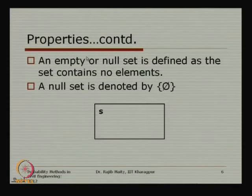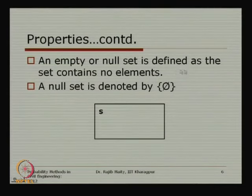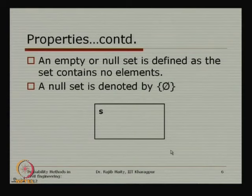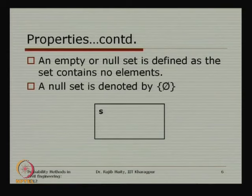The next concept is the null set. When a particular set does not have any element in it, we say it is a null set — it contains no element and is denoted by a special symbol. In the probability concept, the null set is generally the impossible set — the impossible outcome. For example, a negative value for the strength of concrete is an impossible event, so that set is a null set containing no entry with a negative value.